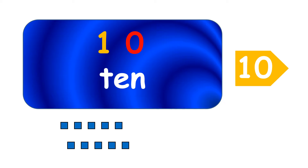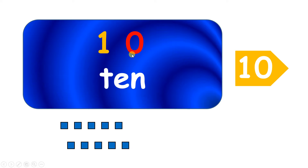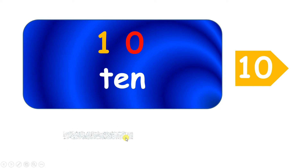And notice how the number ten is written. We have a one first and then a zero. So ten is our first two-digit number — it's made from two digits. We have the one first and then we have the zero. Now we can push these ten blocks together so that we've got one line of ten blocks and none left over. This will help us to understand how the rest of the numbers to twenty are written.